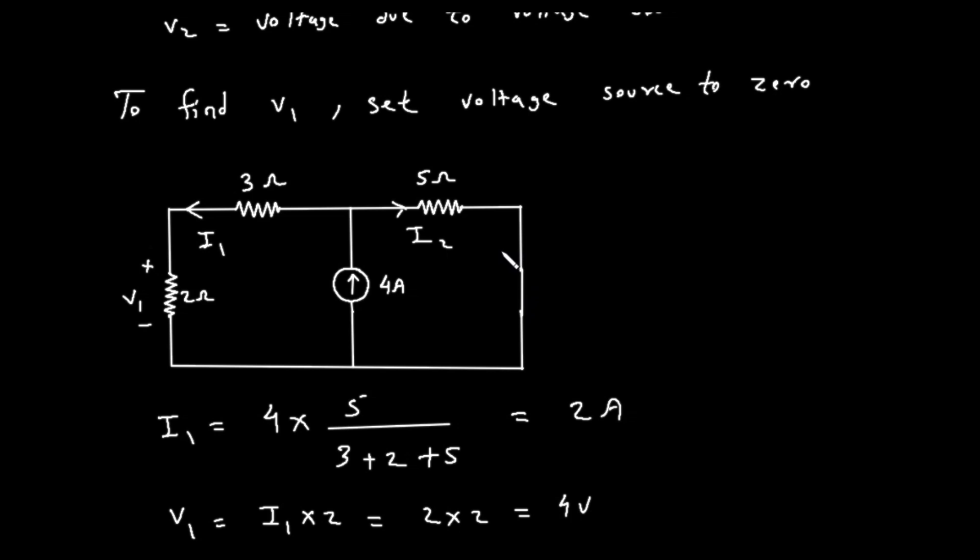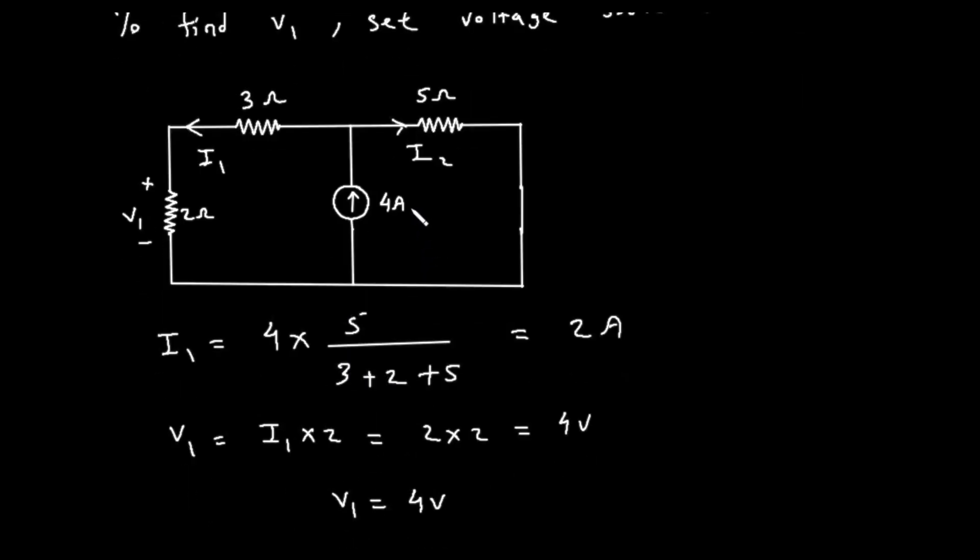The modified circuit now has the 4 ampere current source in the middle. The current from this source splits into two paths. One path goes left through the 3 ohm and 2 ohm resistors. The other path goes right through the 5 ohm resistor. We need to find the current flowing through the 2 ohm resistor, which is labeled as I1. We can find this using the current divider rule.